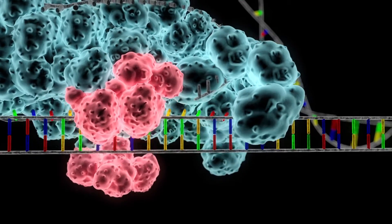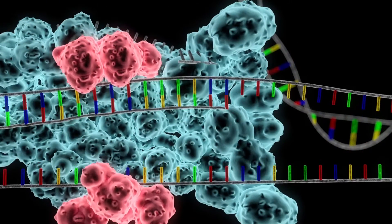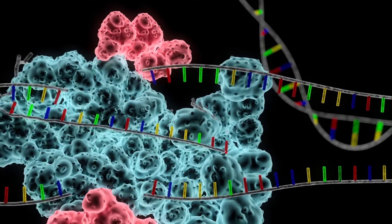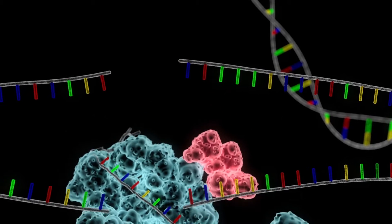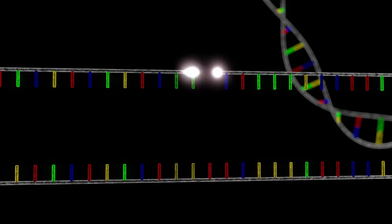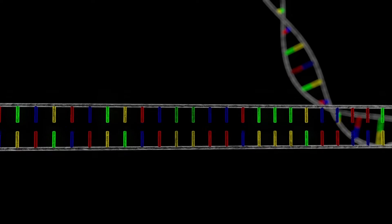After Cas9 binds and partially unwinds the target DNA, it then cuts the DNA at the spot where it is malfunctioning. At this stage, cellular repair proteins recognize the DNA is damaged and rejoin the ends, resulting in small changes to the DNA sequence.